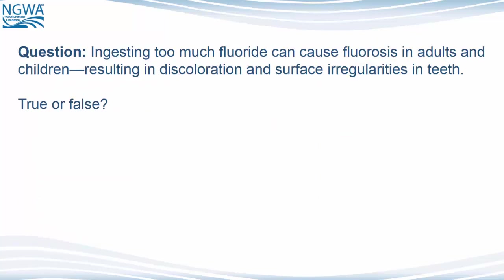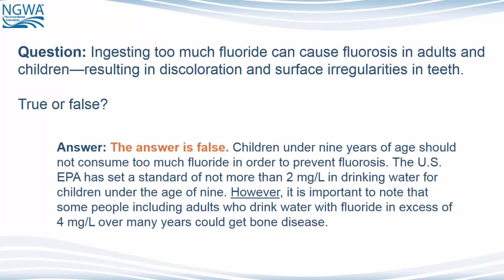Question: Ingesting too much fluoride can cause fluorosis in adults and children, resulting in discoloration and surface irregularities in teeth. True or false? The answer is false. Children under 9 years of age should not consume too much fluoride in order to prevent fluorosis. The U.S. EPA has set a standard of not more than 2 mg per liter for children under the age of 9. However, it is important to note that some people, including adults, who drink water with fluoride in excess of 4 mg per liter over many years could get bone disease.